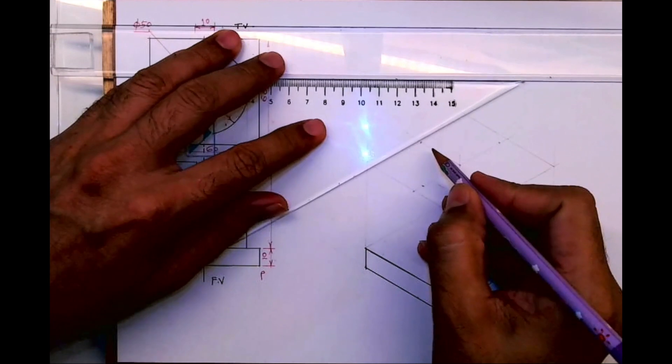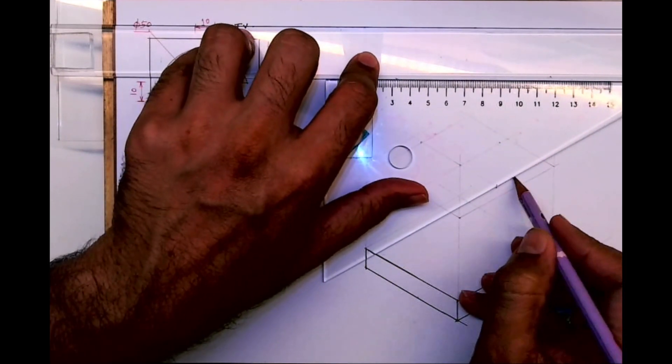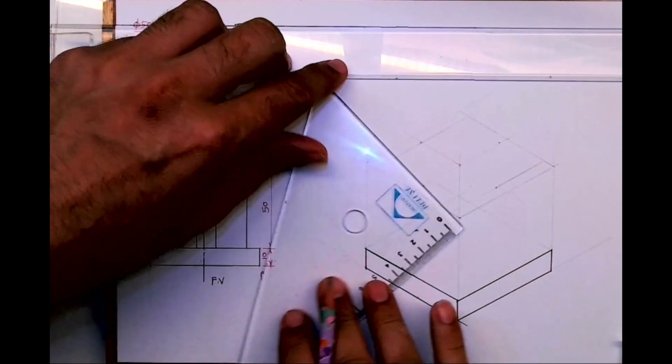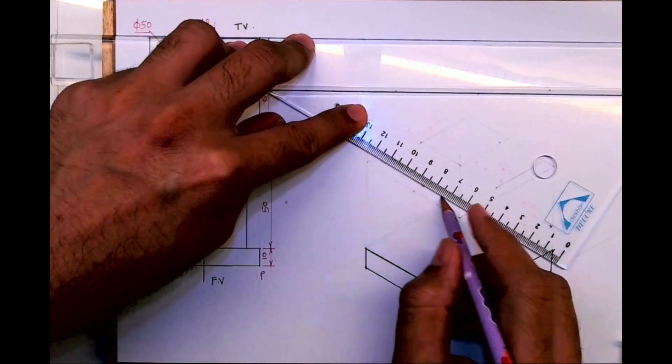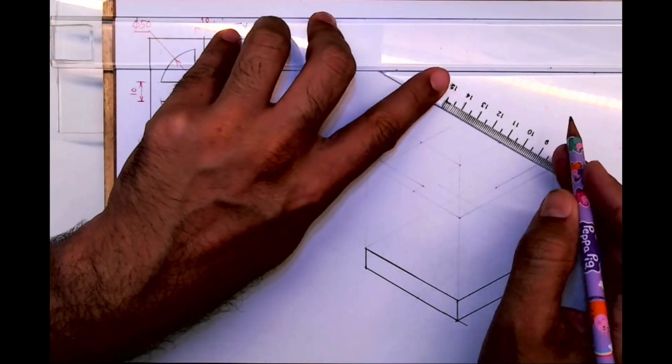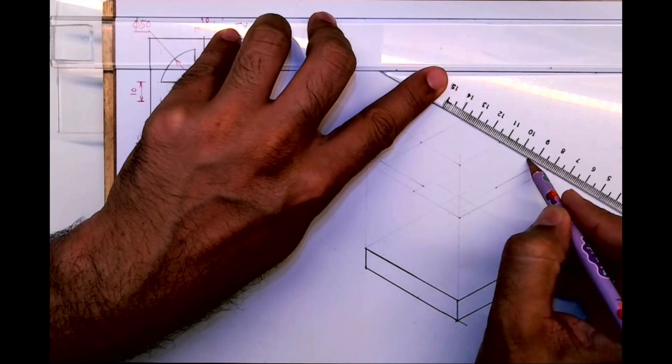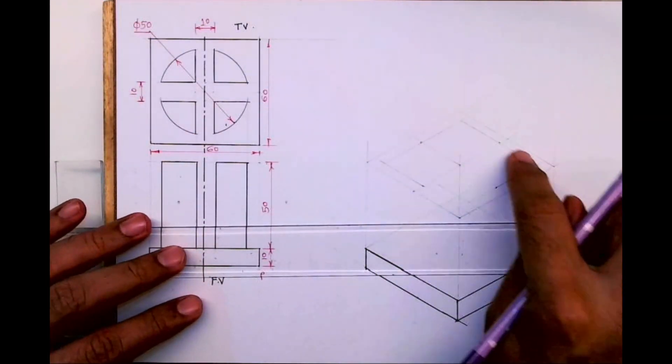After that you draw rhombus. It will be this way. Then you draw longest diagonal.